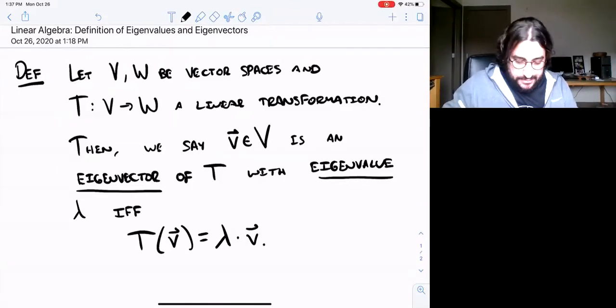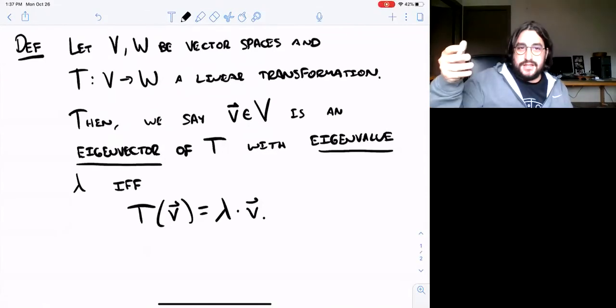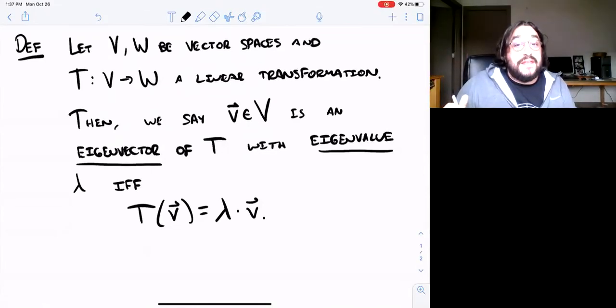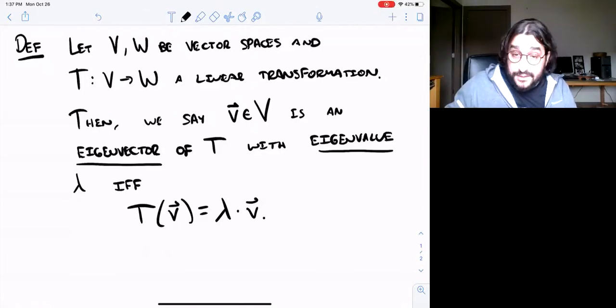So let's look at some examples and non-examples. Notice in each case we'll start by establishing a vector space, a linear transformation, and then we'll look at a vector and decide if it's an eigenvector or not.